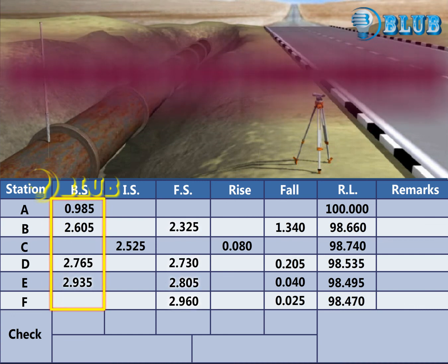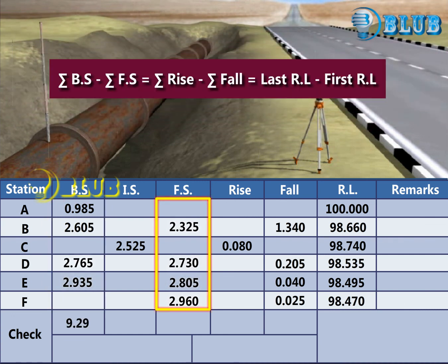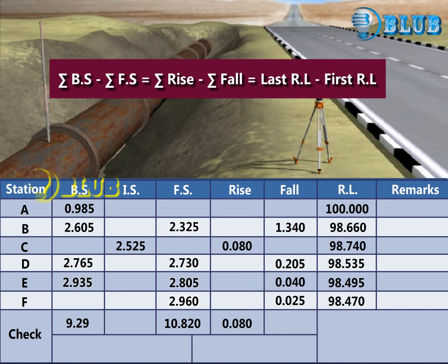Finally, the difference between the sum of backsights and sum of foresights is equal to the difference between the sum of rises and sum of falls.